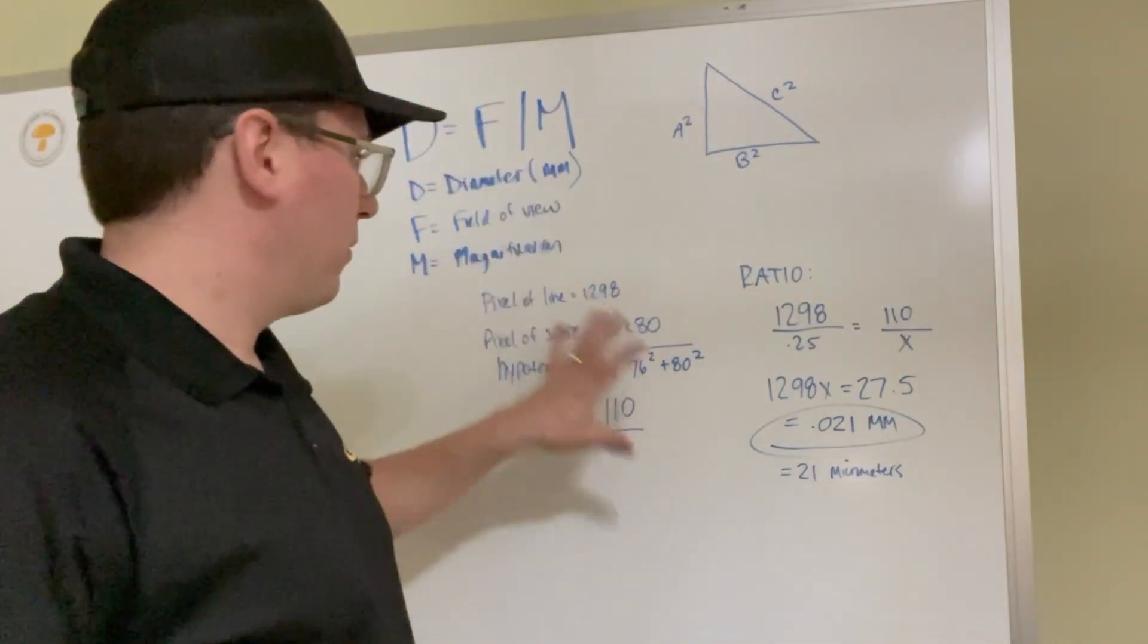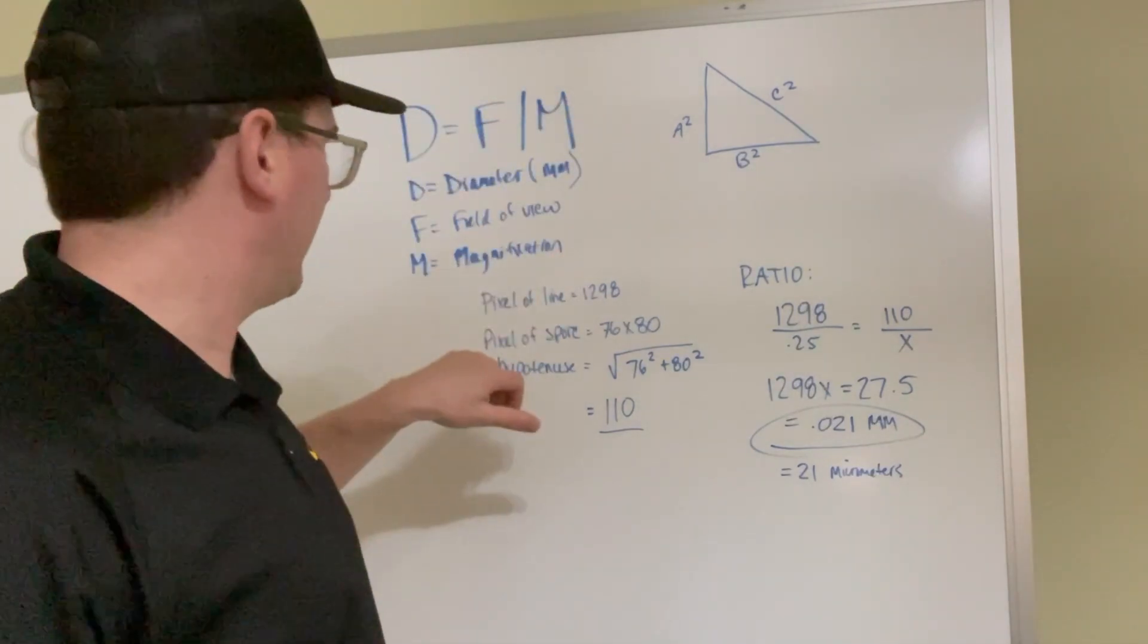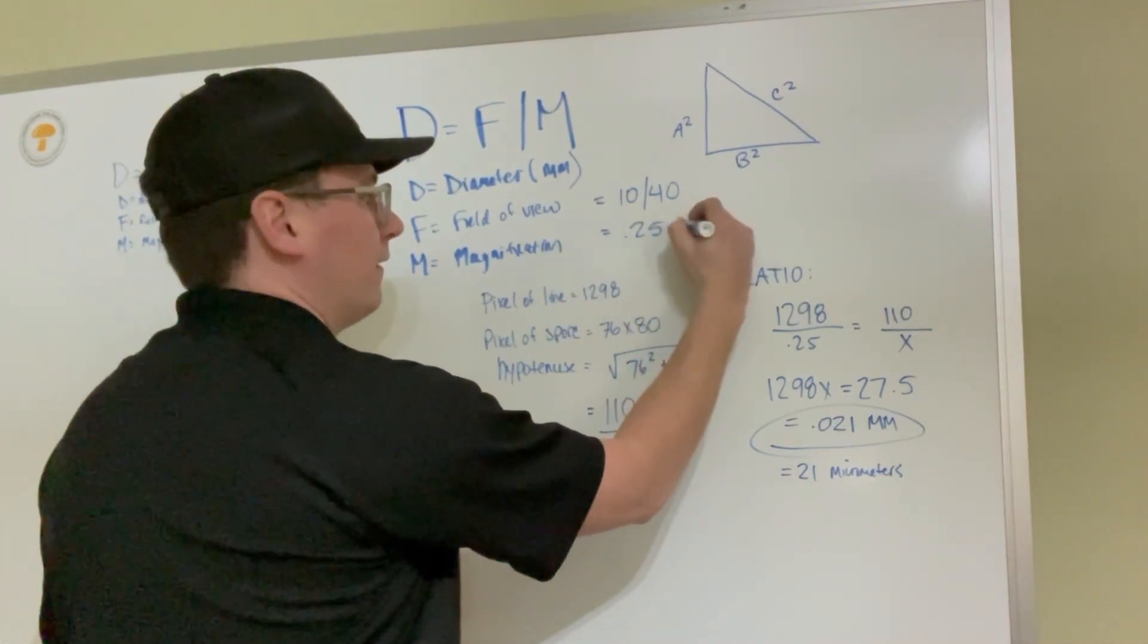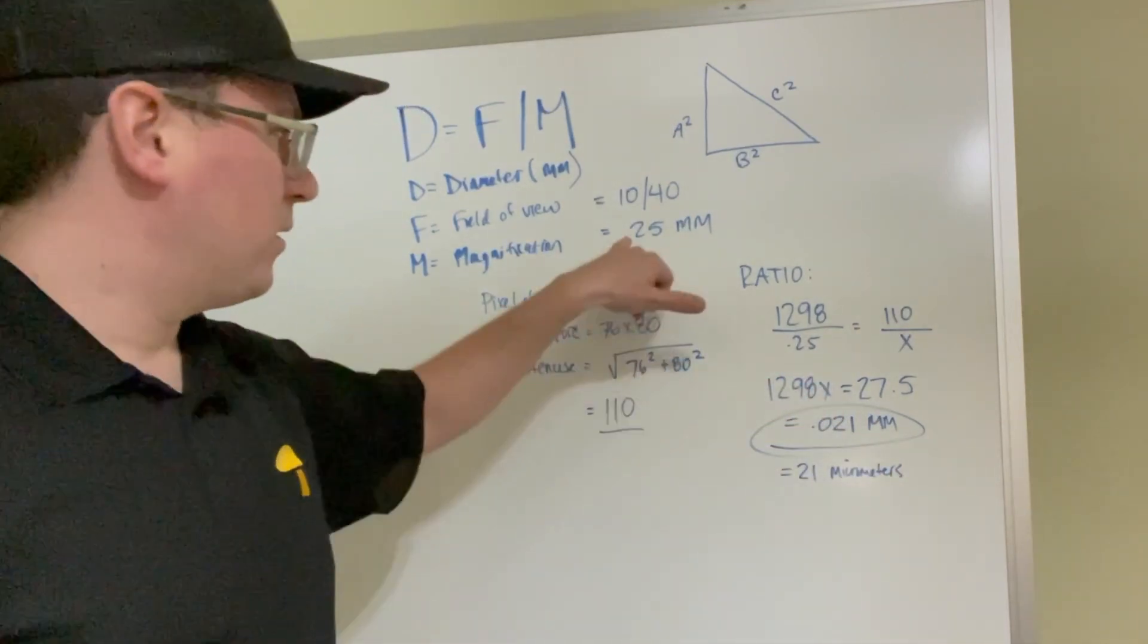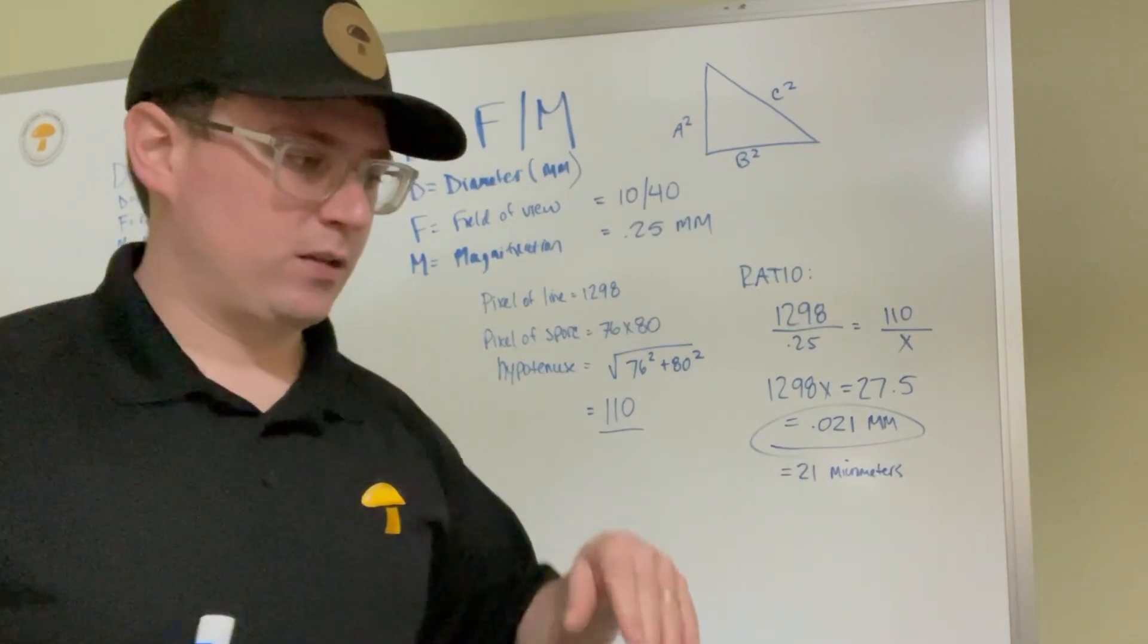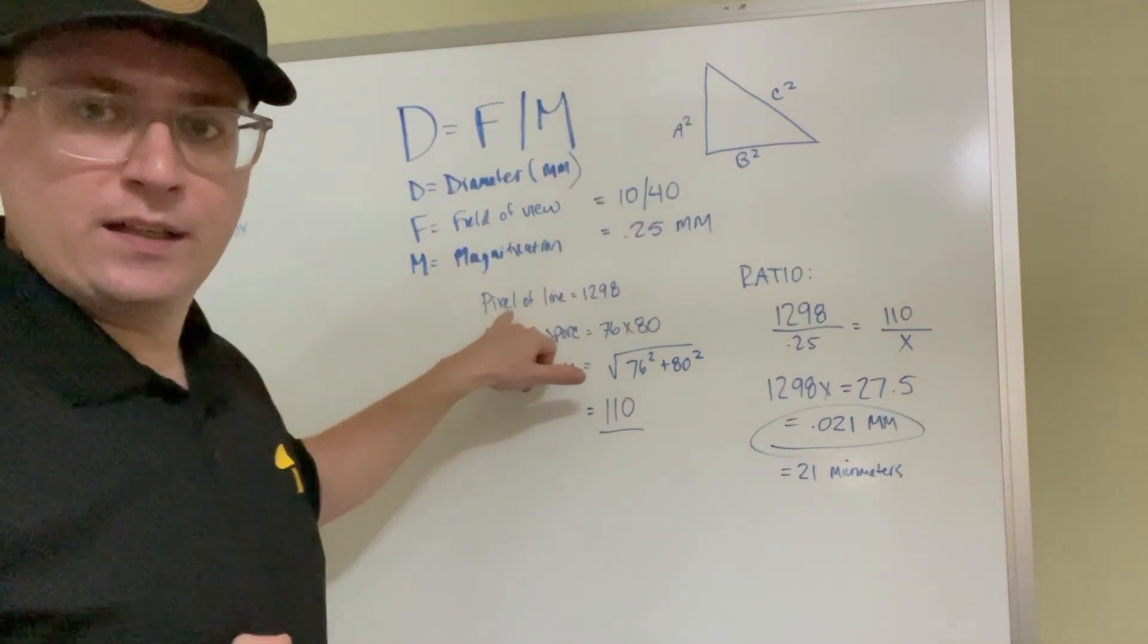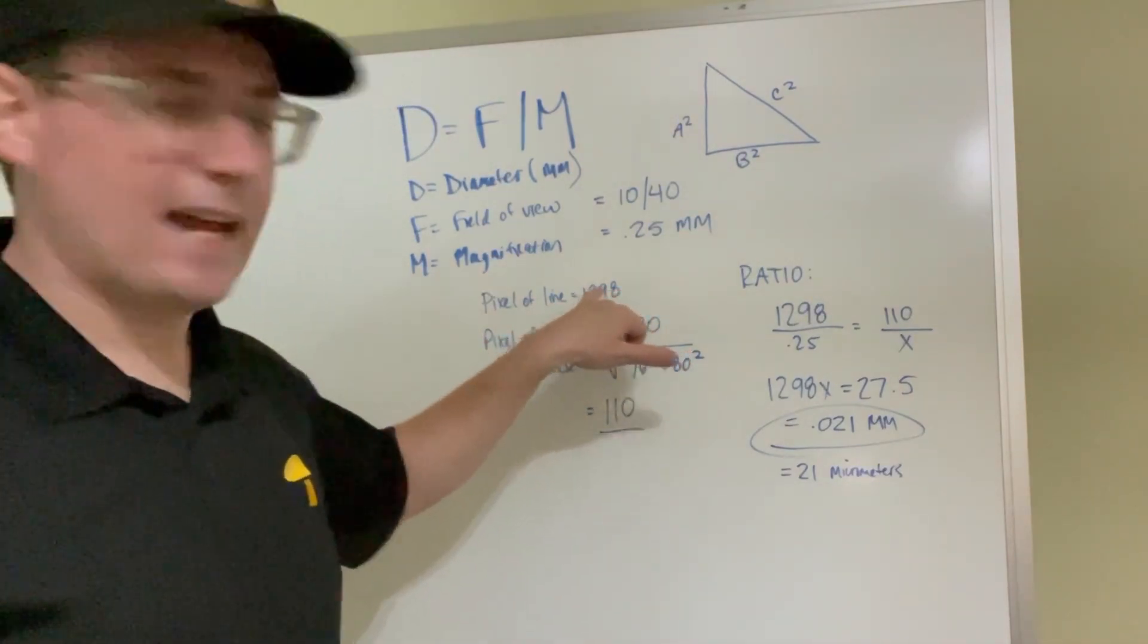So I hope that makes sense. I kind of went through the math already. So if we follow this formula here, you're going to get 10 over 40, which equals 0.25, and that's in millimeters. So the 10x over the 40x gives you a 0.25 millimeter field of view.